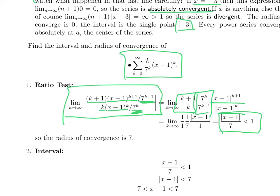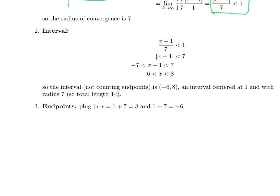The interval is all points a distance less than 7 from 1. Algebraically, multiplying both sides by 7 gives absolute x minus 1 is less than 7, meaning x minus 1 is between minus 7 and 7. Adding 1 to all three sides — hysterical maniacal laughter — gives negative 6 is less than x is less than 8. So the interval of convergence is from minus 6 to 8, centered at 1 with radius 7 and total length 14. Now we have to deal with endpoints: you take a plus 7, which is 8, and a minus 7, which is negative 6, and plug each in for x.